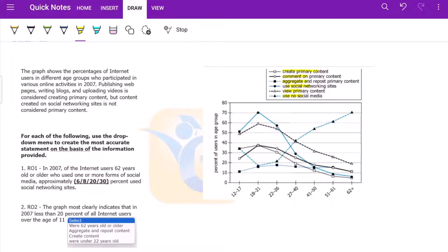The graph shows the percentage of internet users in different age groups who participated in various online activities in 2007. Publishing web pages, writing blogs, and uploading videos is considered creating primary content. But content created on social networking sites is not considered primary content.